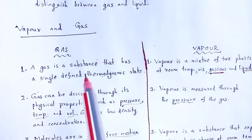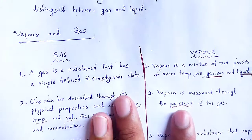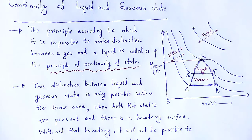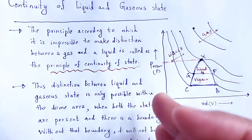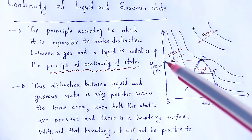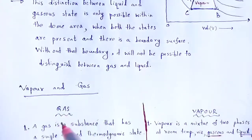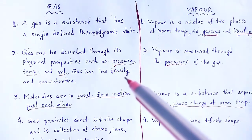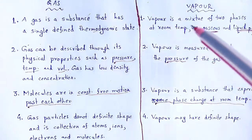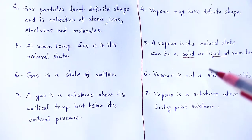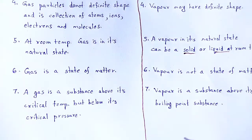So these are some basic differences between gas and vapour. With the help of this video lecture, we understand what is the continuity of liquid and gaseous states. Using Andrews' experiment on carbon dioxide, we took the isotherms as examples, and with the help of these isotherms, we defined the principle of continuity of state. Next, the difference between vapour and gas was covered through various points of basic differentiation. So with these useful and informative notes, let me wind up the session. Thank you.